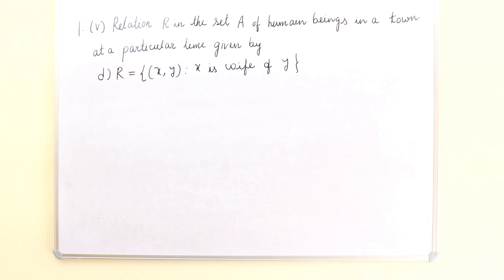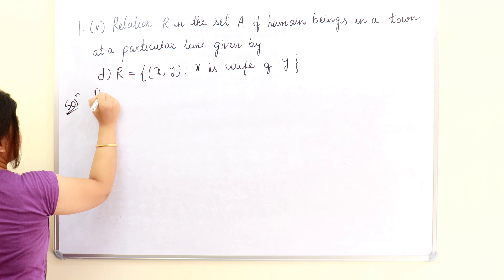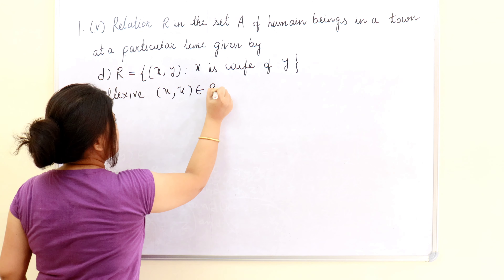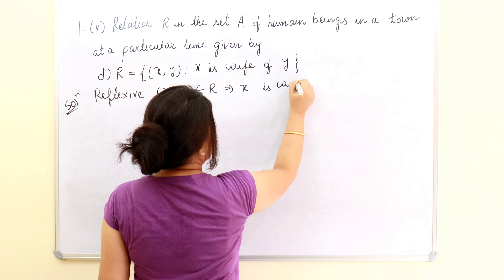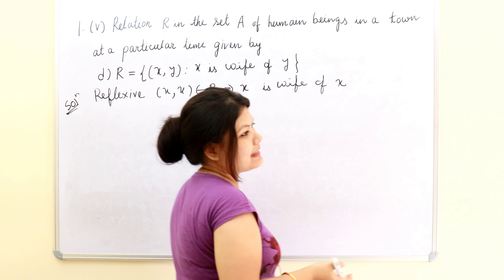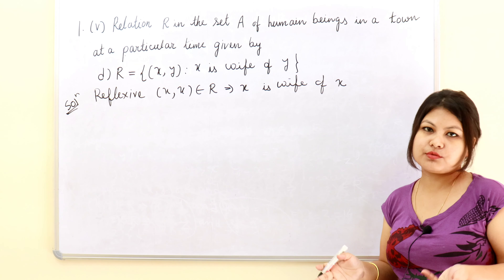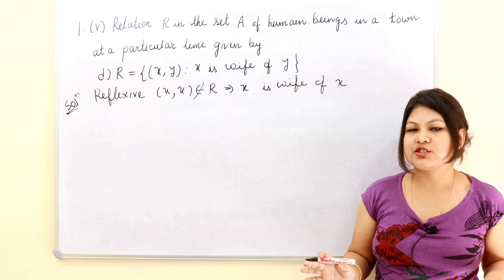Next question: relation R in the set A of human beings in a town at a particular time, given by R = {(X,Y): X is wife of Y}. First, let's check for reflexive. The condition for reflexive is: (X,X) belongs to R, which would mean X is wife of X. Practically, if we see the real world, this is not possible — how can a person be wife to himself? That's why this is not reflexive. The condition (X,X) belongs to R is not satisfied.